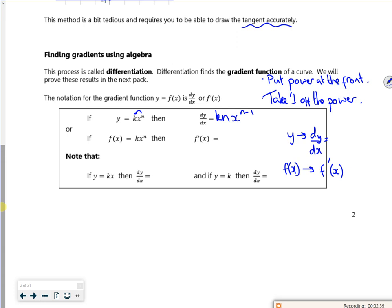Now if I have just like 3x or something like that, that's 3x to the power 1. So if I differentiate it, I bring the power down, and then take one off the power. But x to the power 0 is just 1, so all I've got is 3.